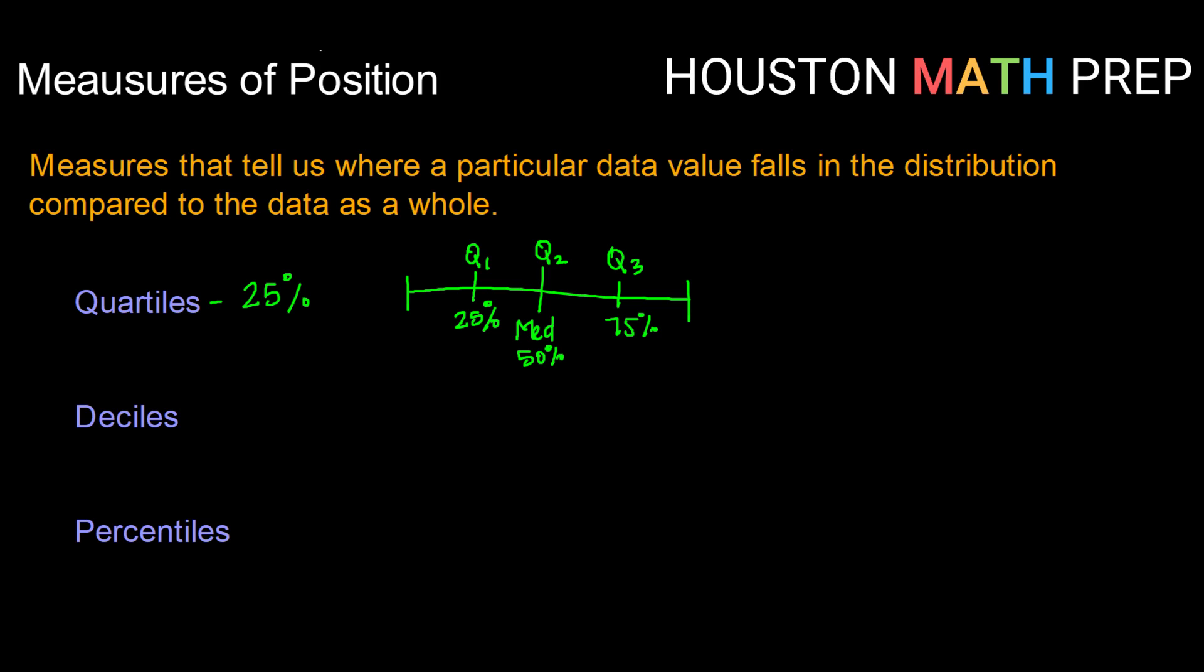Our next measure of position are deciles. These cut our data into 10% increments. If you imagine lining up all your data, your median would be D5, or the fifth decile.